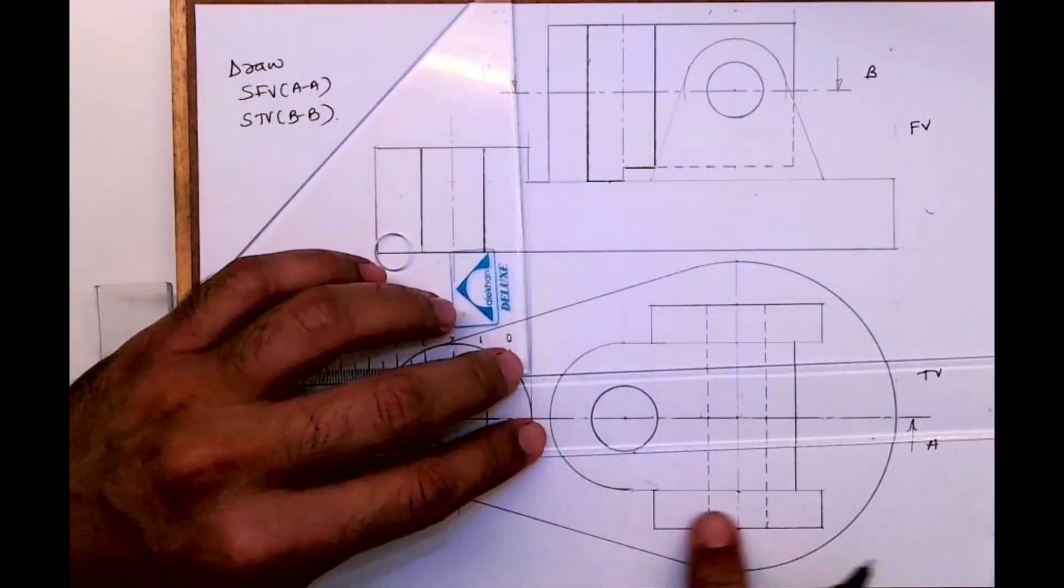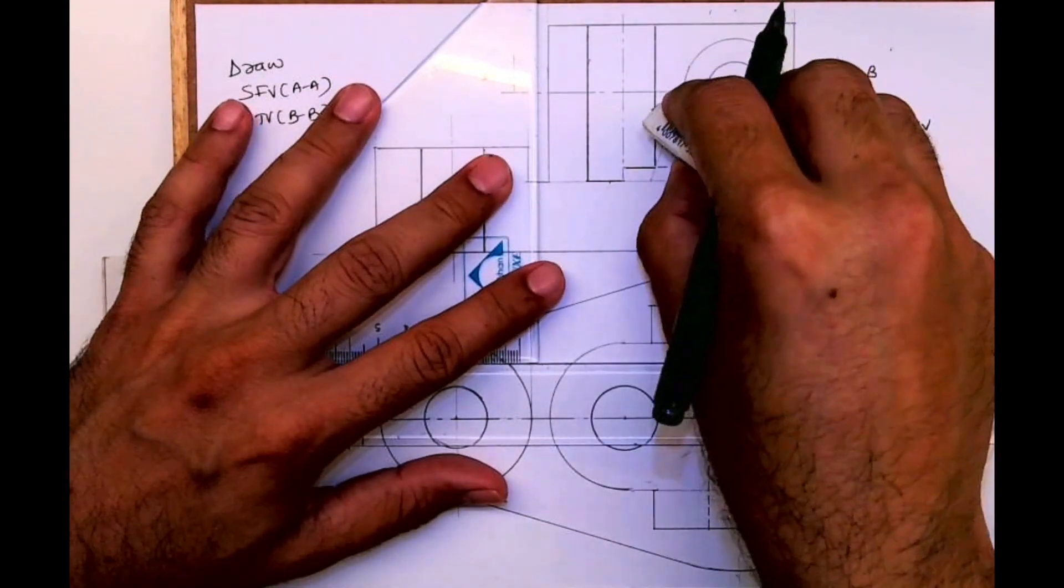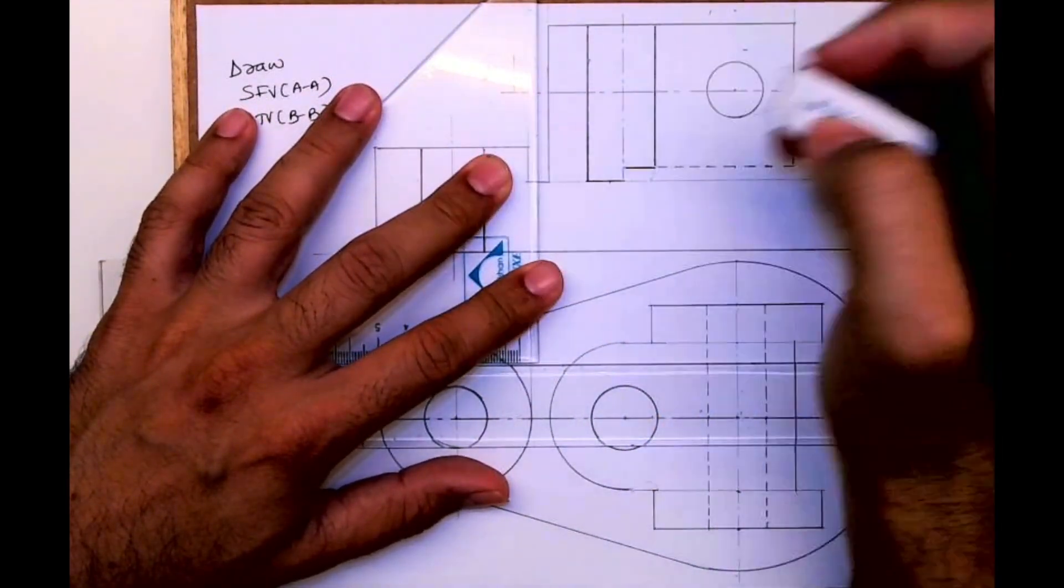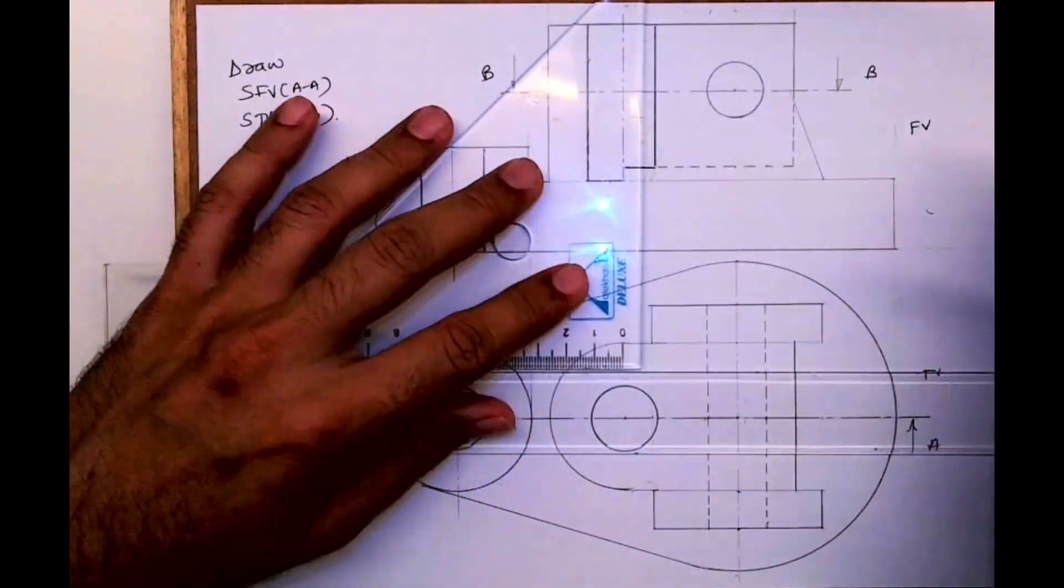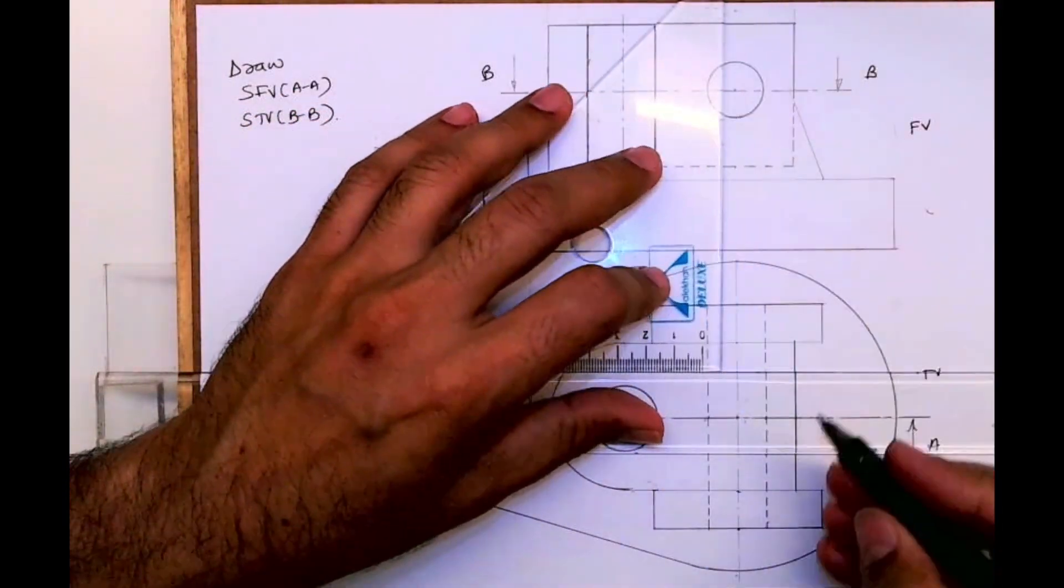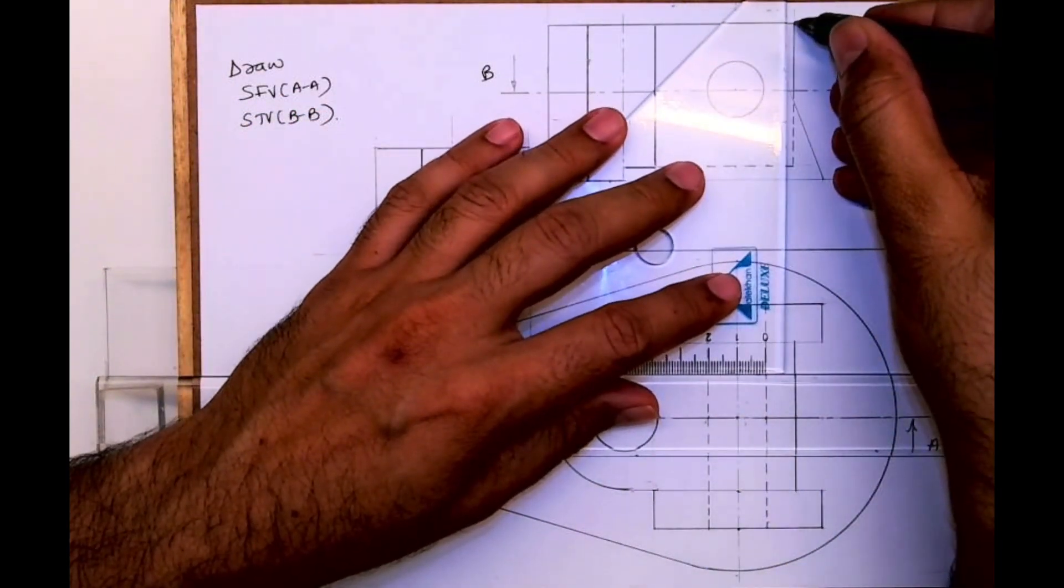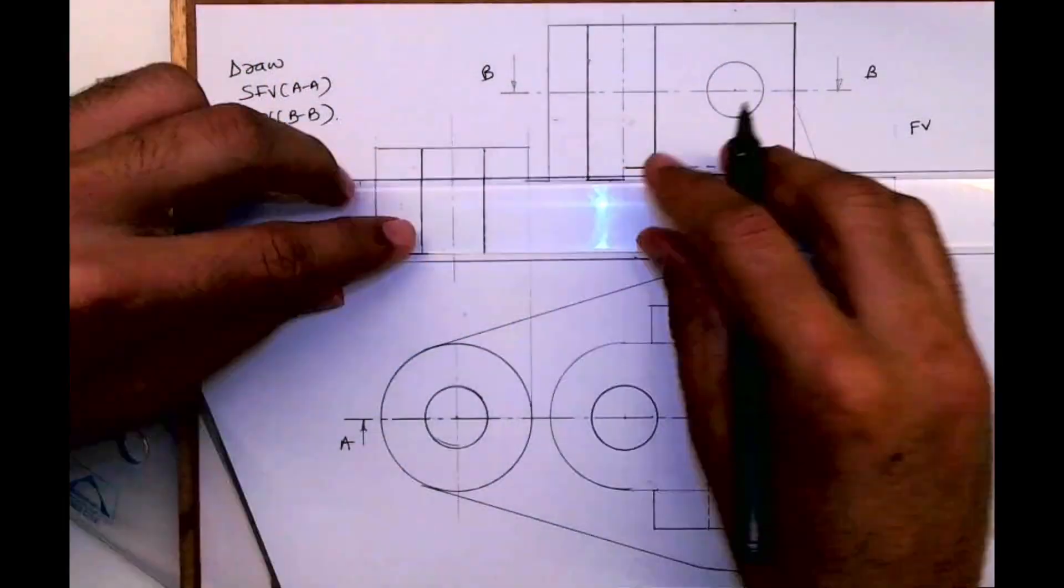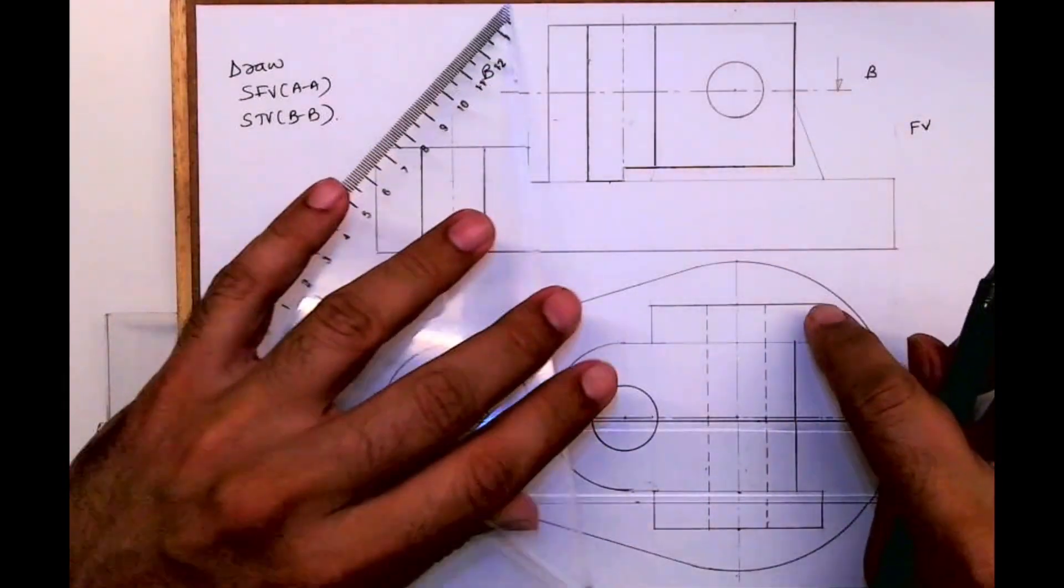This part will go away because it is not there, and now this is getting cut so it will be dark. Whatever you cut, the dotted will become dark.